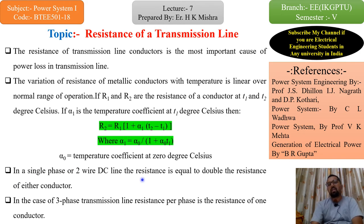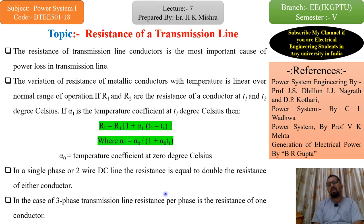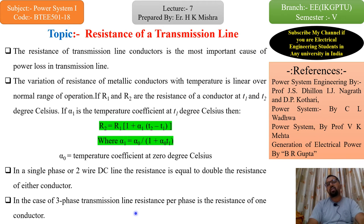Calculation कैसे करते हैं resistance का transmission line में — in a single-phase two-wire DC line, the resistance is equal to double the resistance of either conductor. मतलब अगर two-wire DC system है तो हमने एक wire का जो resistance calculate किया, उसको double कर दो. But in the case of a three-phase transmission line, resistance per phase is the resistance of one conductor. उसमें resistance per phase अलग-अलग निकालना पड़ेगा, क्योंकि unbalanced condition में तीनों phase में voltage equally नहीं होता.